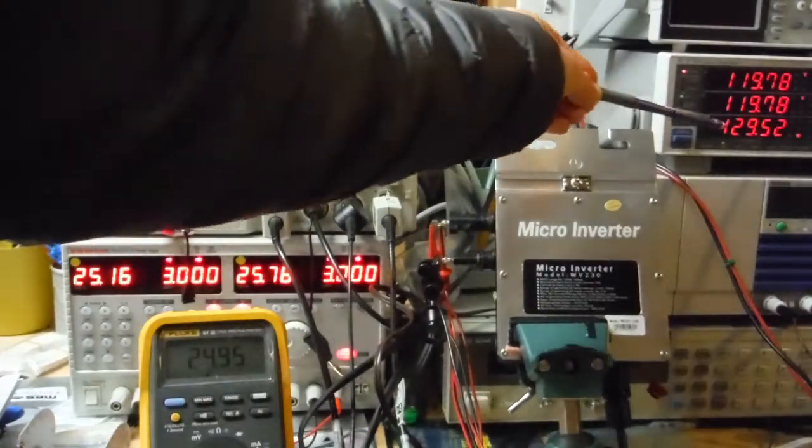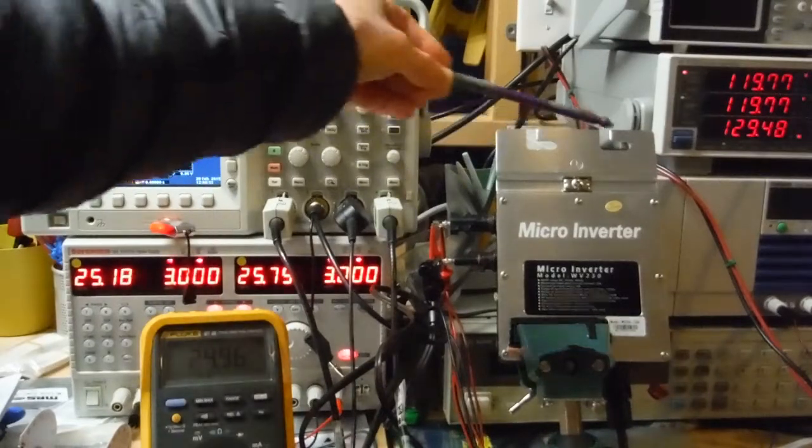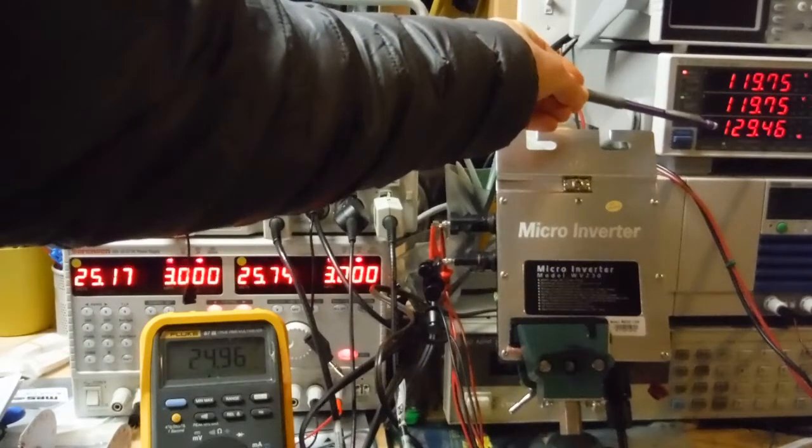But a more accurate measurement is going to be over here. So I've got 25 volts in at 6 amps. 130 watts out.